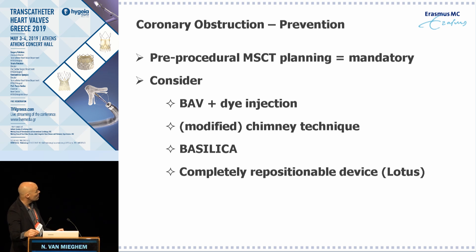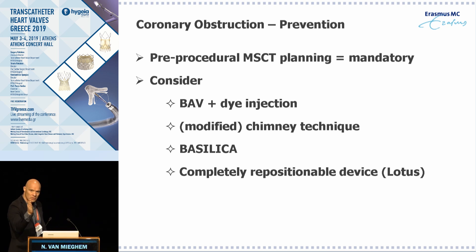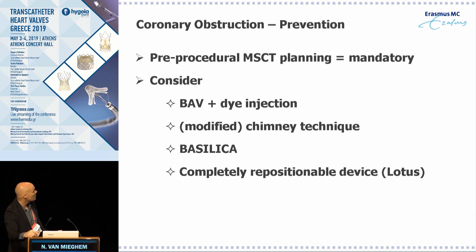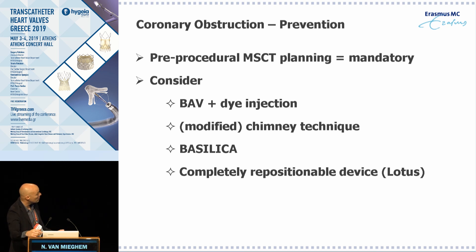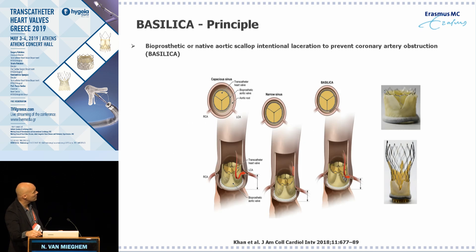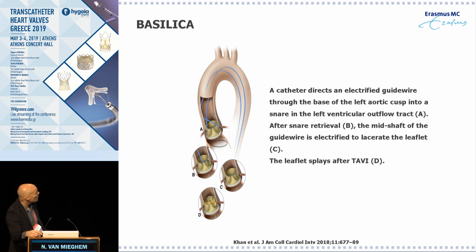What are the preventive techniques? First, comprehensive pre-procedural planning with simulations to determine the distance between the coronary ostium and the anticipated valve frame. If it is below three millimeters, think about preventive measures. The two important preventive measures are the chimney technique and BASILICA, or you can select a completely repositionable device — if you are unhappy due to coronary obstruction, you reposition the device lower.